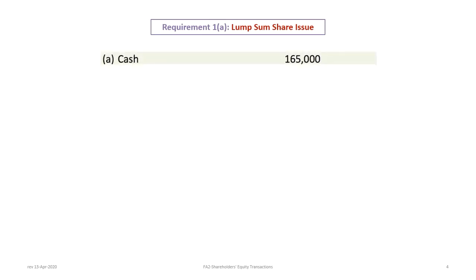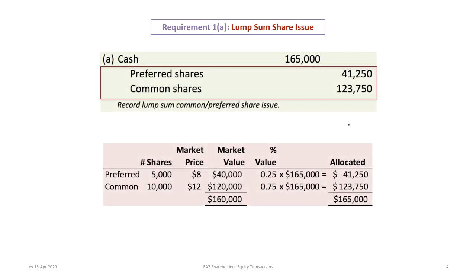The first transaction is a lump sum share issue. When the company issues shares for a lump sum, it's going to debit cash. Pitt is going to receive $165,000 in cash. But the problem is the company is issuing both common and preferred shares, so the company will have to determine how much of that $165,000 to allocate. We use the stated market price to determine the market value and allocate accordingly.